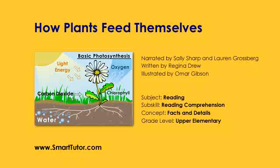If we were to put the ingredients of photosynthesis on a recipe card, here is what we would need: water, carbon dioxide from the air, chlorophyll from the cells of green plants, and sunlight for energy. Without these ingredients, plants could not make the sugar they need for food. Here is how the recipe would work.